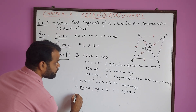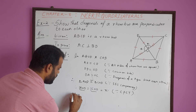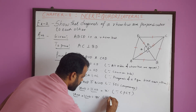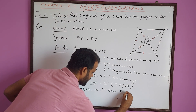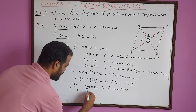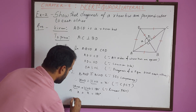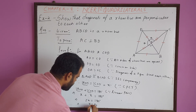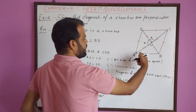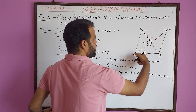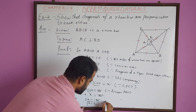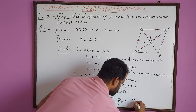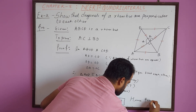Therefore: angle AOD plus angle COD equals 180 degrees, because they form a linear pair. This implies X plus X equals 180 degrees, which implies 2X equals 180 degrees, which implies X equals 90 degrees. Therefore AC is perpendicular to BD. Hence proved.